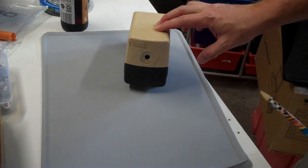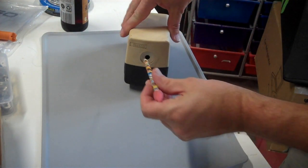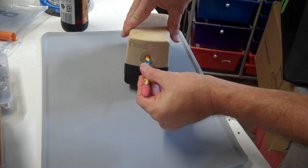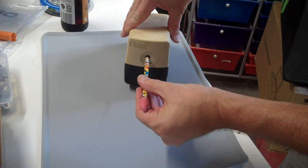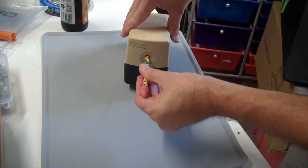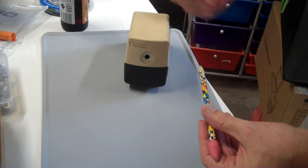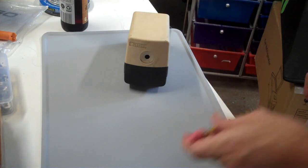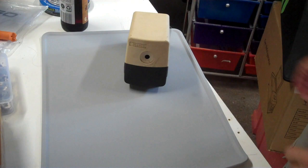This is a Boston Model 19 electric pencil sharpener, and it has a pretty common failure mode. You can hear it turning, but the pencil sharpener part isn't spinning inside. So let me show you what's wrong and how to fix it.